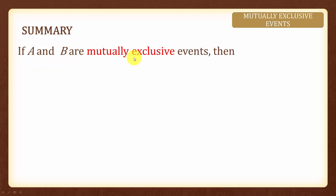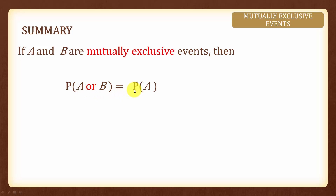If 2 events are mutually exclusive, then the probability of getting A or B is equal to the probability of getting A plus the probability of getting B.